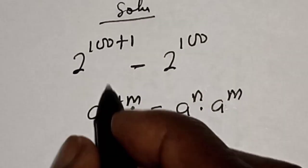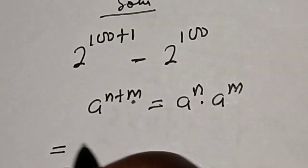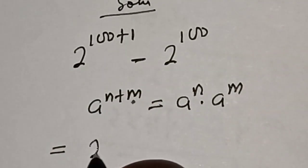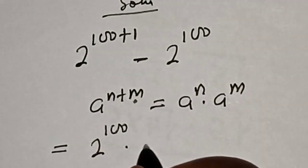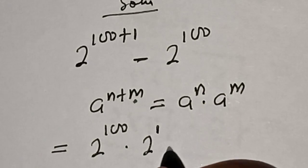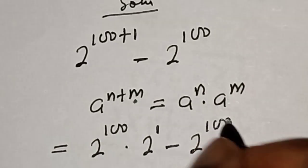So this equals 2 raised to power 100 multiplied by 2 raised to power 1, minus 2 raised to power 100.